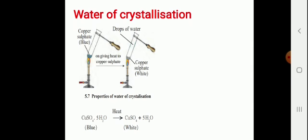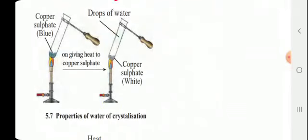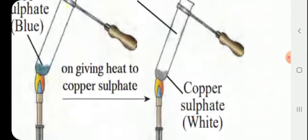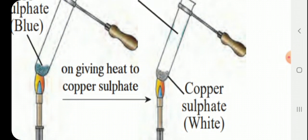Today we are going to discuss the topic water of crystallization. Here is the diagram in which an experiment is shown. Copper sulfate crystals are taken into two different test tubes. In one test tube, add some water and shake it. The crystals of blue vitriol, that is copper sulfate, dissolve in water and the solution formed is blue in color.